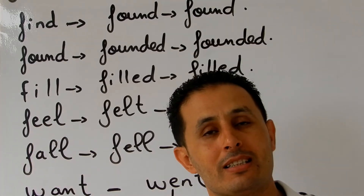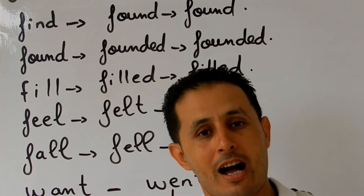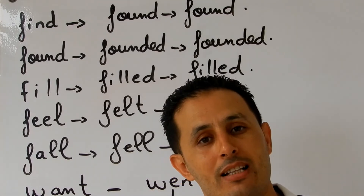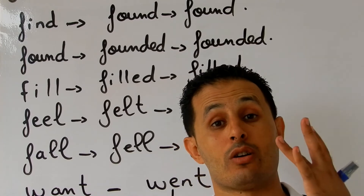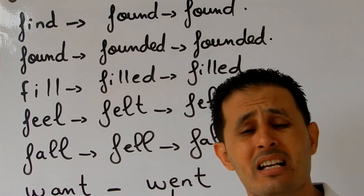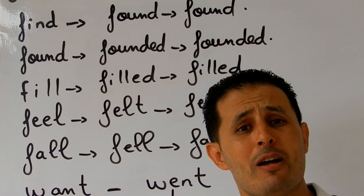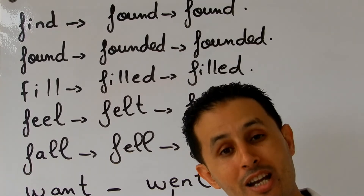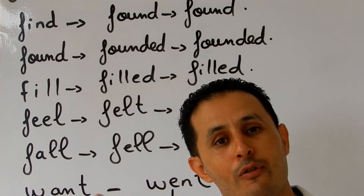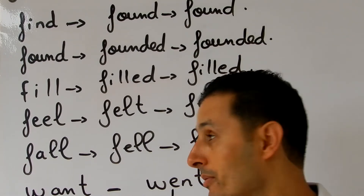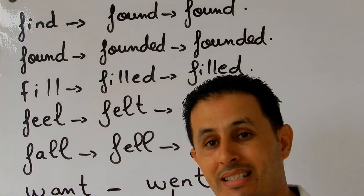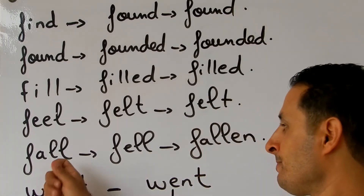Now what about 'feel'? I feel tired today, I feel happy today, I feel okay today. 'Feel' is an irregular verb — the simple past is 'felt' and the past participle is also 'felt': feel, felt, felt. Example: I felt over the moon yesterday when my father told me about the trip to England.